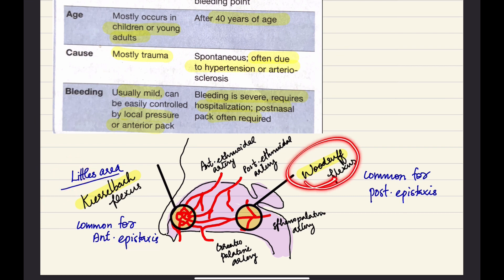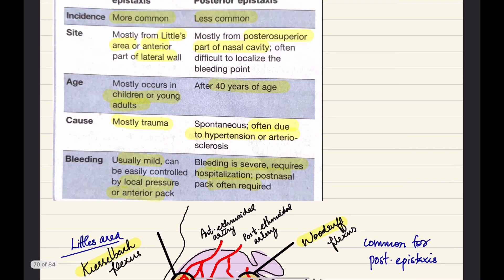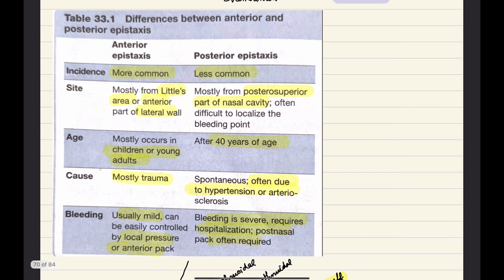Now we will learn the differences between anterior and posterior epistaxis. Anterior epistaxis is more common whereas posterior epistaxis is less common. Site: it is mostly from Little area or anterior part of lateral wall, whereas posterior epistaxis is mostly from posterosuperior part of nasal cavity, which is often difficult to localize.